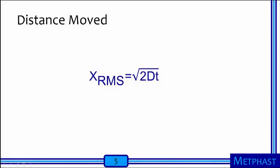This can be further illustrated using the equation x_rms equals the square root of 2 times d times t, where t is time and d is the diffusion constant. Both observations take place in the same amount of time, so the only difference in distance moved is the diffusion constant d.